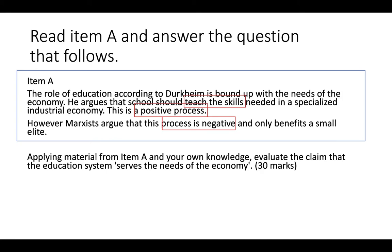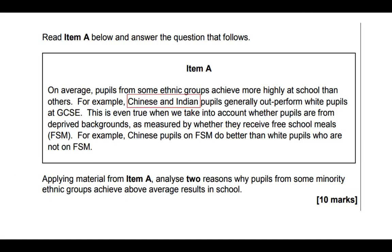With a 30 marker or 20 marker, you don't have to stick just to the item — you can talk about everything in the topic as long as it's linked to the question. Even though this question doesn't mention Willis, we can still talk about Willis because he has things to say about the education system serving the needs of the economy. The clue is in the question: 'applying material from item A and your knowledge.' So you apply the item but you can also apply your knowledge. Just to note: on the 10 marker, there is no 'and your knowledge' — you must apply the item only. If you talk about black Caribbean boys or girls, you'll get zero marks; it must be about Chinese and Indian students doing better than average.